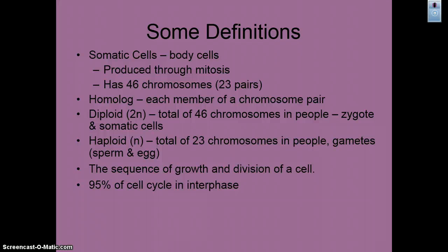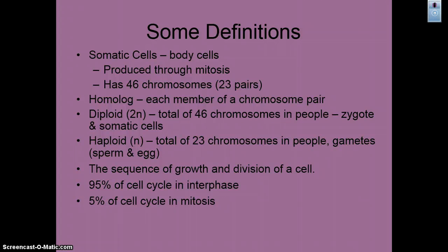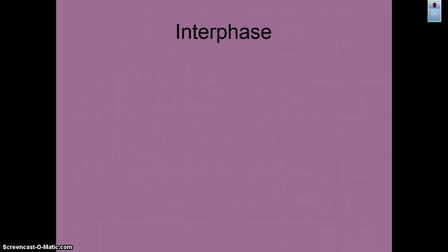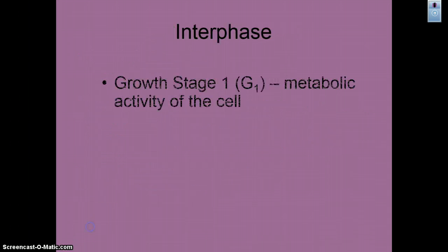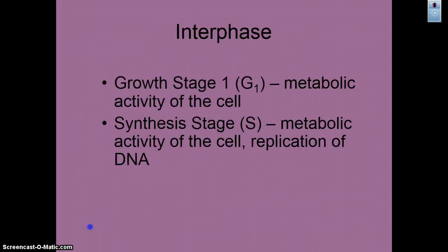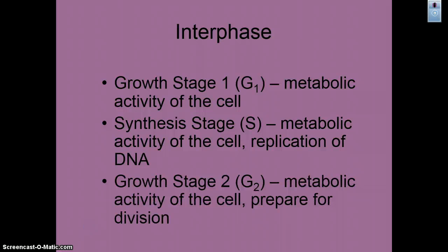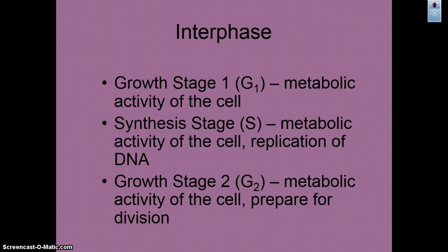95% of the cell cycle is spent in interphase; the other 5% is in mitosis. So interphase is not part of mitosis, but it is part of the cell cycle. Interphase is broken into three separate stages: Growth 1 (G1), the S stage, and Growth 2 (G2).